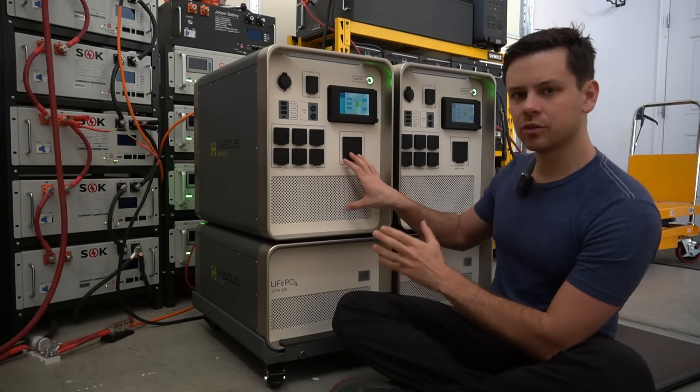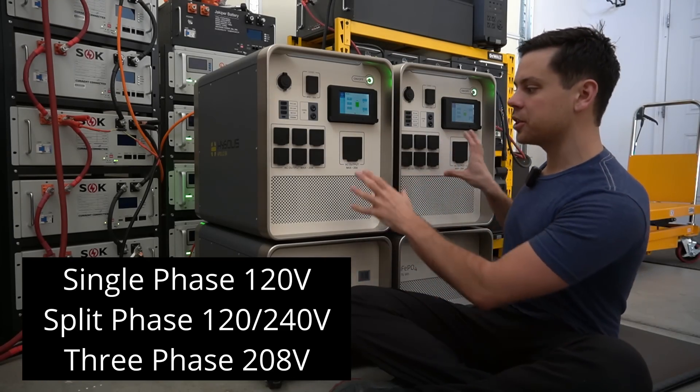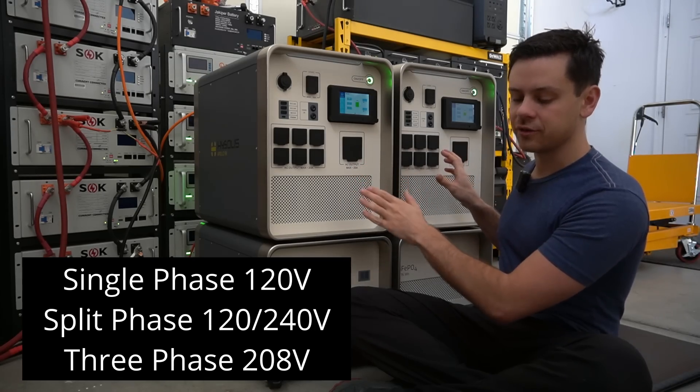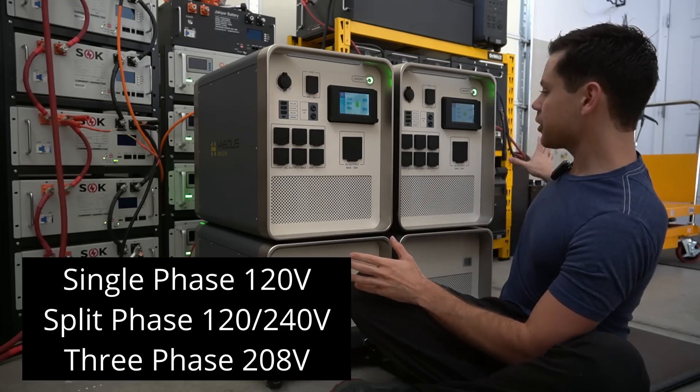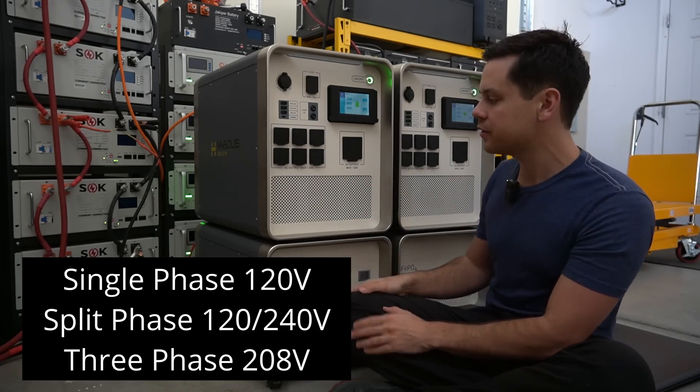Next, each unit has its own single phase AC inverter, but if you buy two of them you can put them into parallel and have a split phase output or 120/240 volt. And if you buy a third one you can actually have a three phase output which is the first one that I know of that can do that.